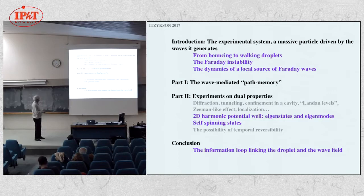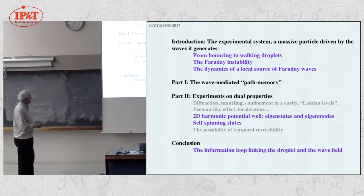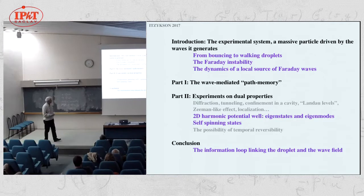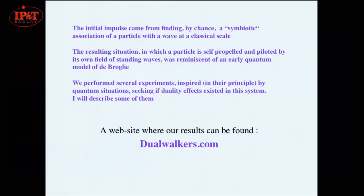Over the years we did quite a number of experiments seeking a form of duality in this system — a form of diffraction, a form of tunneling, confinement in a cavity, a sort of lambda levels, a sort of Zeeman-like effect, and so on. But I will concentrate on two experiments: what happens when these objects are confined in a 2D harmonic potential well, and whether you can get self-spinning states in this system.